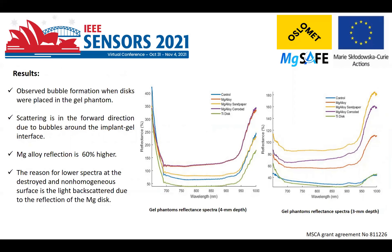Scattering is in the forward direction due to the bubbles around the implant gel interface. As in this first figure, we target the implant tissue interface. It is clear that the reflection on magnesium is 60% higher as compared to other samples, when calculating the mean absolute error by taking the control as a reference.